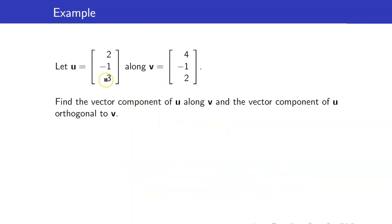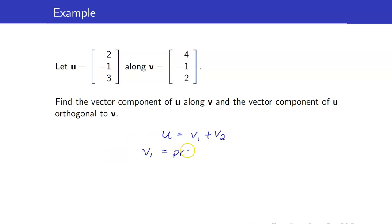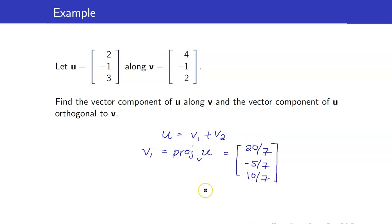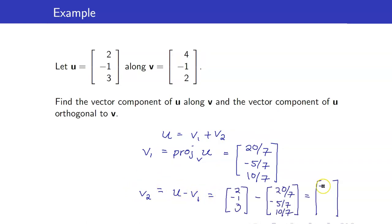Let us have an example using the same vectors u and v. We want to find the vector component of u along v (v1) and the vector component of u orthogonal to v (v2). We already computed v1 as the projection of u along v, which is (20/7, -5/7, 10/7). Therefore, v2 = u - v1 = (-6/7, -2/7, 11/7).